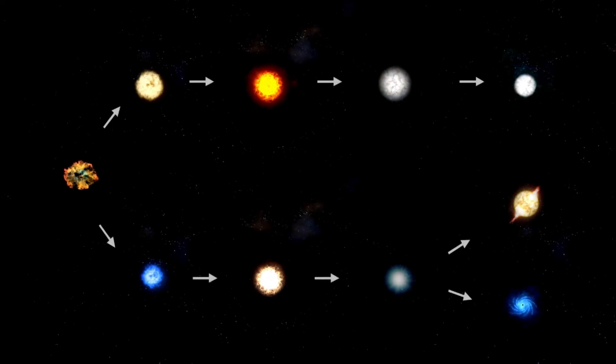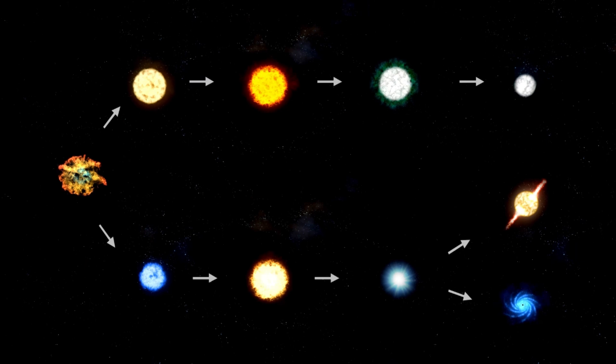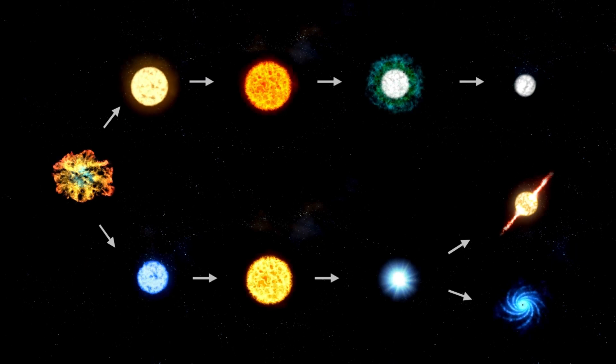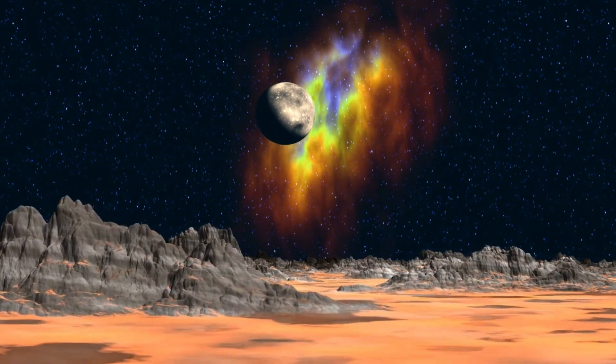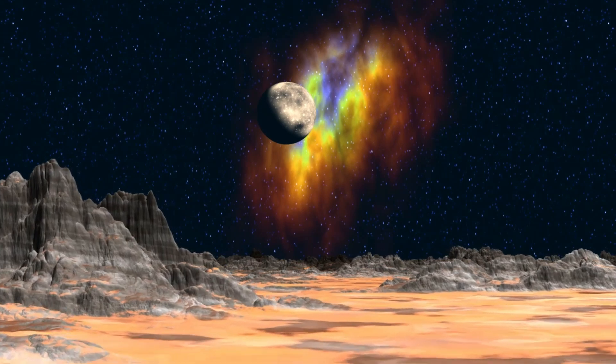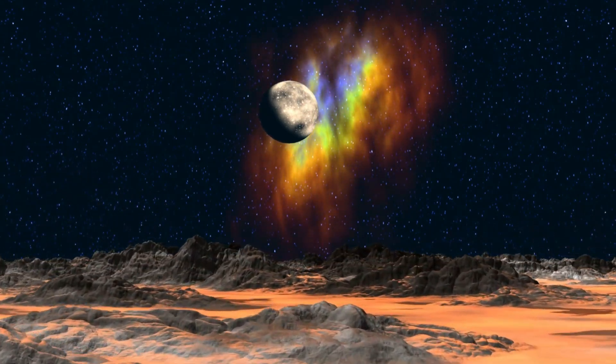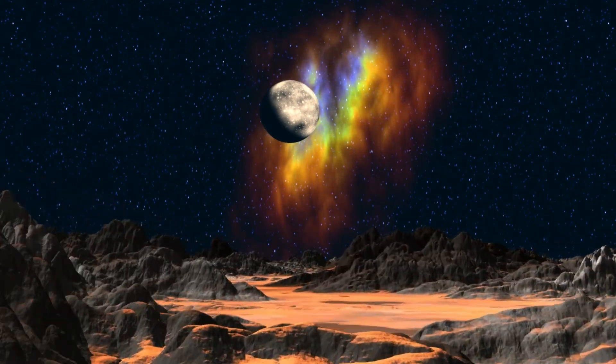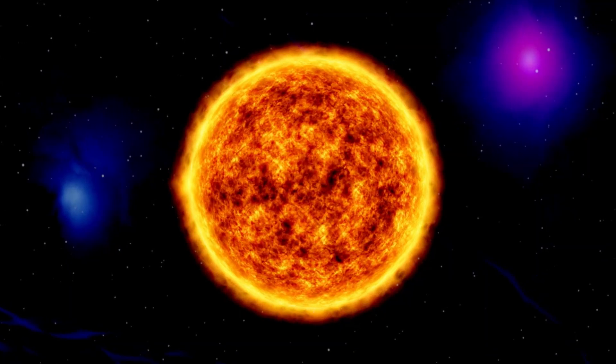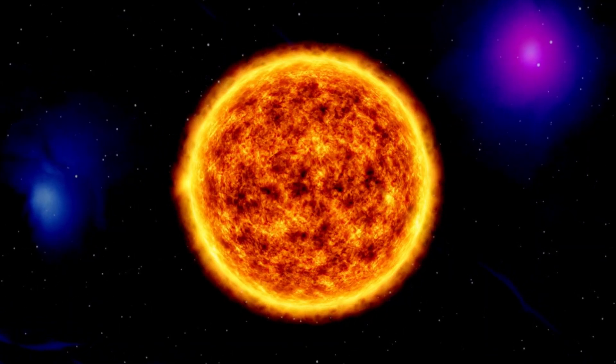The color of Betelgeuse has evolved throughout history. Records from ancient Rome and China describe Betelgeuse as appearing yellow around 2,000 years ago, while Arab astronomers in the 9th century were the first to note its transition to red. This evolution in color not only reflects Betelgeuse's physical changes but also underscores the star's dynamic life story as observed by humanity over millennia.